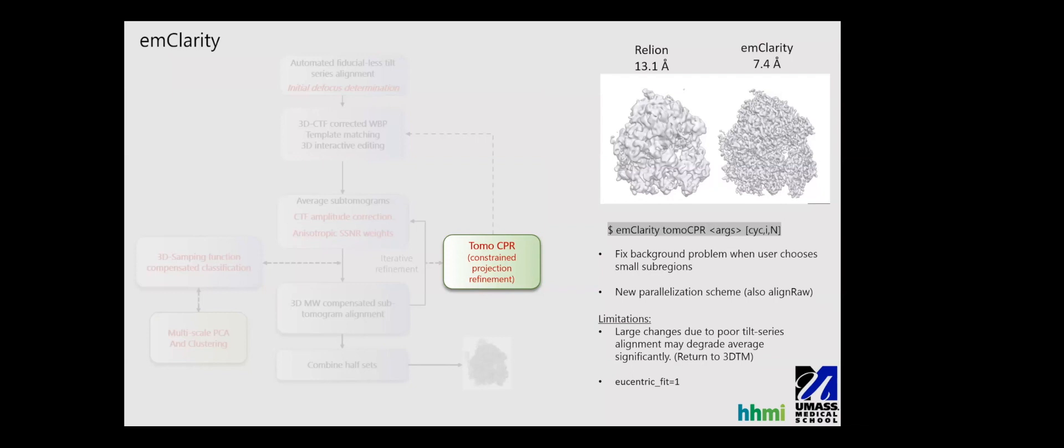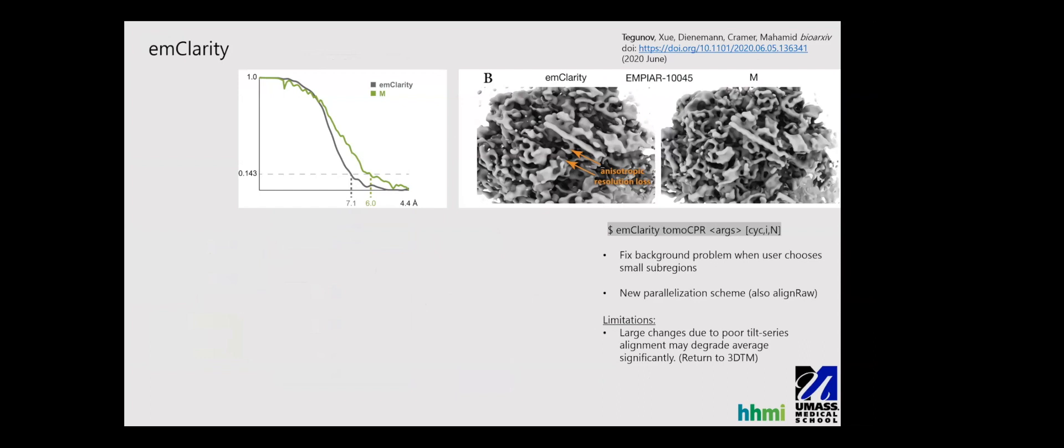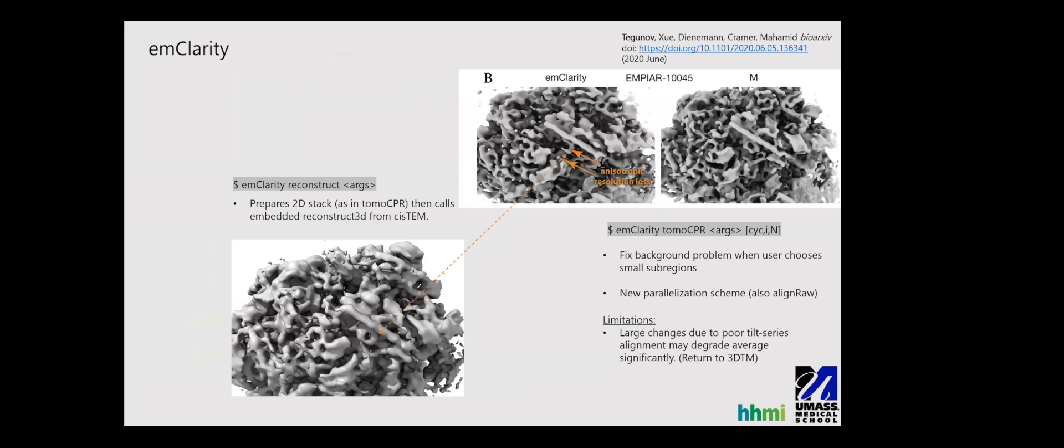So I fixed a few problems where if users were cutting out small, say you had a collection of gag virions, you could cut out around that gag virion only for your subtomogram analysis. But then with tomoCPR, that really skewed all the background information. So now by default, the full background is reconstructed every time. And to make it a little more efficient, because that's expensive, I've added a new parallelization scheme where you can divide it up over multiple nodes in an easier way with this argument in brackets here. Again, limitations of the technique. If you have very large changes due to an initial poor tilt series alignment, your average can degrade so much that you can never actually reconverge back to a proper solution. So what I would advise in those cases is just to go back to 3D template matching, which you can just think of as a global search like Relion. Again, a figure from Dimitri's M paper showing EMClarity on the left and M on the right, where we had some anisotropic resolution loss, and I'm glad he pointed this out.